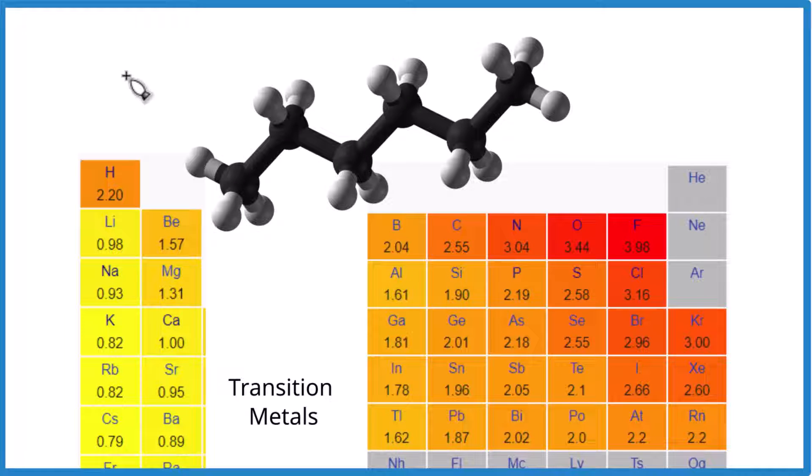Let's take a look at whether alkanes are polar or non-polar. I'm going to look at hexane here. It's an alkane. It has one, two, three, four, five, six carbons, six carbon chain.